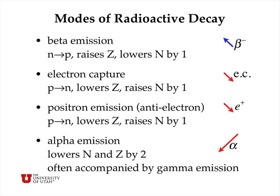There are several modes of radioactive decay accomplished by unstable isotopes. We've already seen that beta emission, which occurs with tritium, converts a neutron into a proton — that raises the atomic number of the atom but lowers the number of neutrons by one. Just the opposite is electron capture, where a proton can actually capture one of the electrons in an atom and turn that proton into a neutron. This lowers the atomic number but raises the number of neutrons by one.